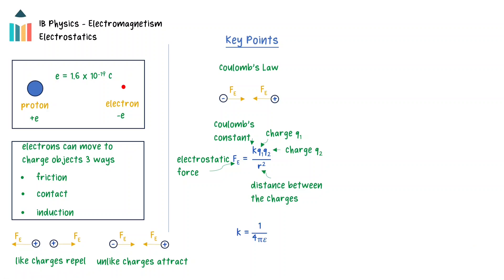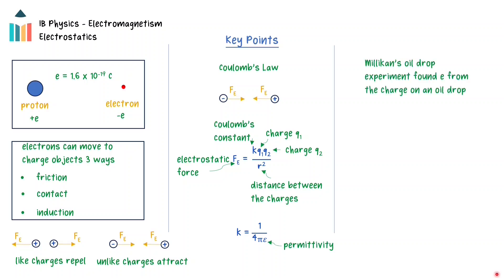Coulomb's constant k depends on the medium that the charges are in, according to the formula k equals 1 over 4 pi epsilon, where epsilon is the permittivity of the medium. Finally, Millikan's oil drop experiment determined the magnitude of the elementary charge in a two-stage process. In the first stage, the droplet becomes ionized as it falls with terminal velocity, and the upward forces of drag and buoyancy are balanced by the downward force of gravity. In the second phase, the droplet is held aloft in an electric field created by parallel plates with a potential difference between them. The upward electric force equals the downward force of gravity, and through these balanced forces the charge on the oil droplet and the magnitude of the elementary charge can be found.